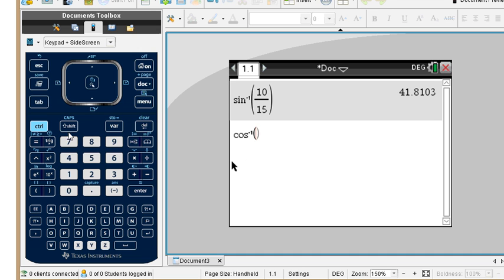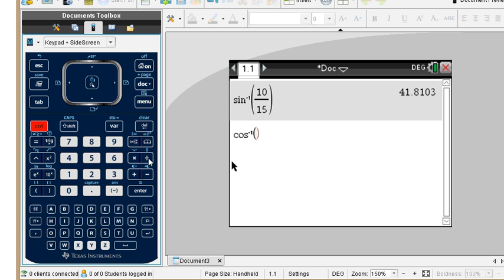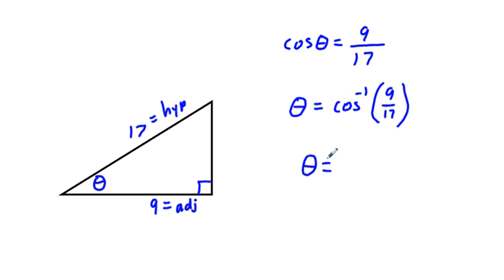That's not cosine to the negative one power, it's inverse cosine. So we put the fraction 9 over 17, and we get an angle of 58.03 degrees, rounded to the nearest hundredth. So 58.03 degrees.